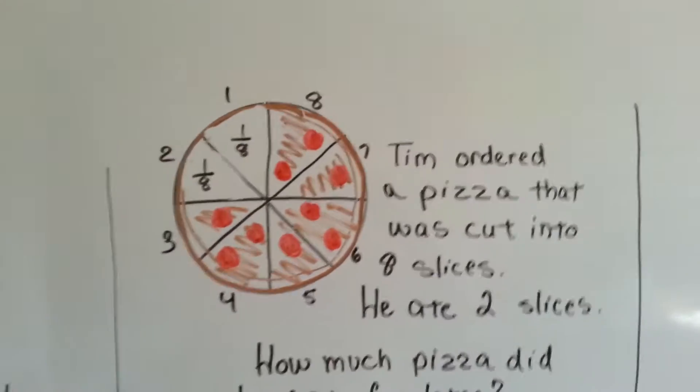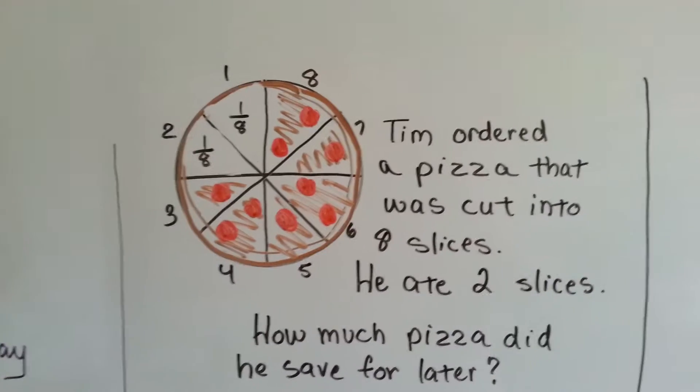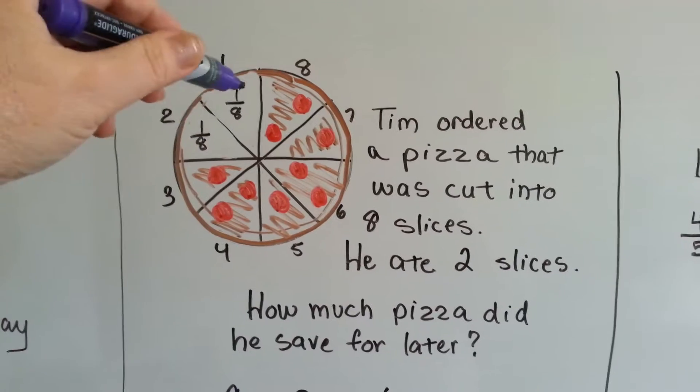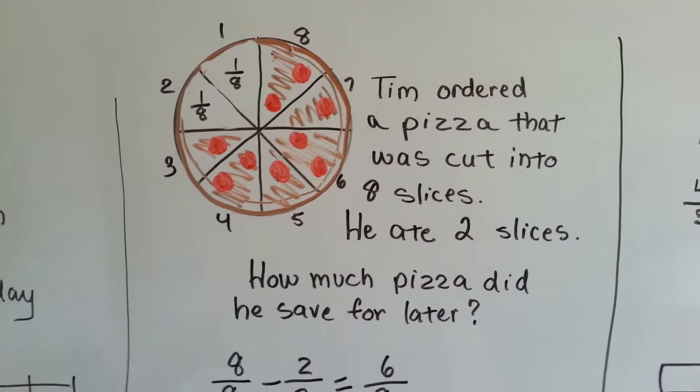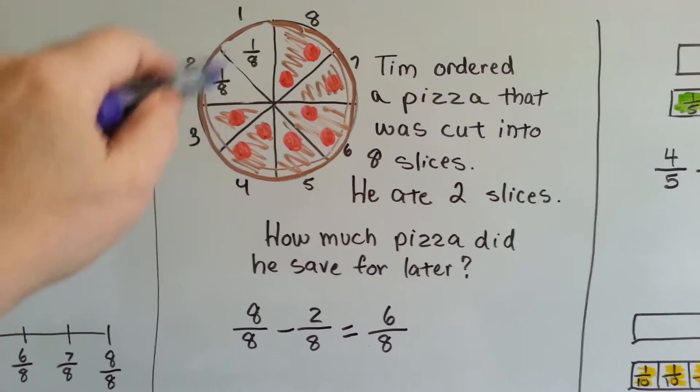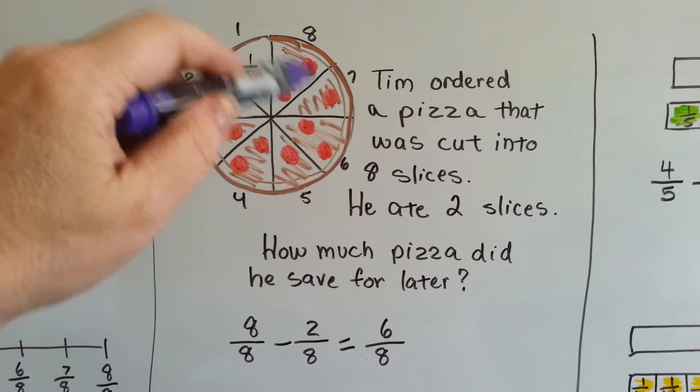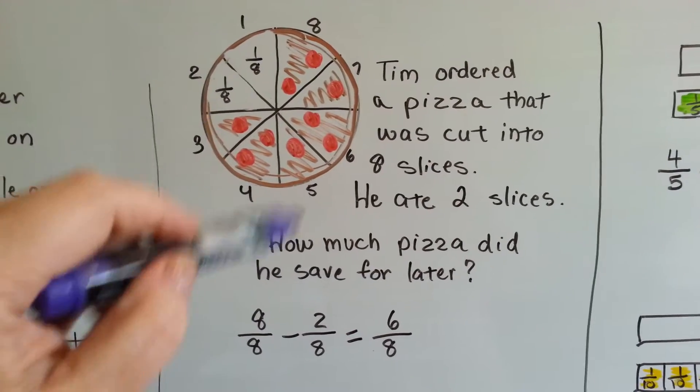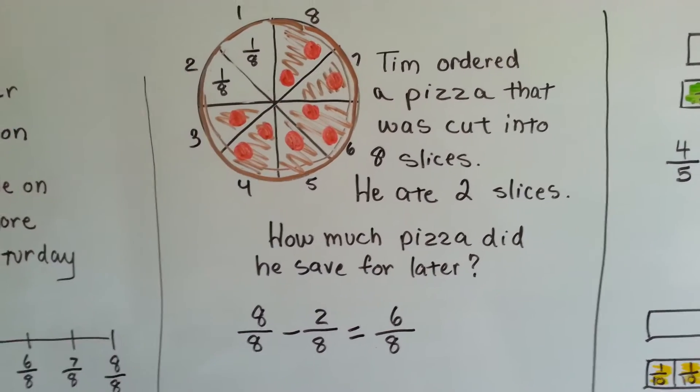Now let's look at this. Tim ordered a pizza that was cut into eight slices. He ate two of the slices. He ate a one-eighth and a one-eighth. How much pizza did he save for later? Well, if it was split into eight pieces, the whole thing was eight pieces of eight. He ate two of them and now there are six pieces of the eight left over.